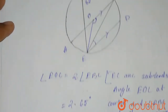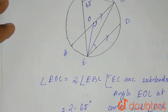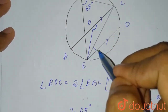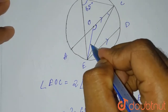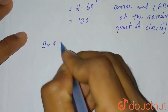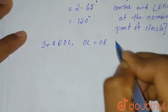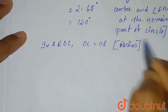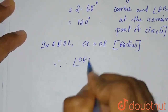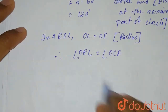Angle EOC equals 130 degrees. Now, if we consider triangle EOC, we can see that OC equals OE because both of them are radii. That means the angles opposite to these equal sides will be equal. So in triangle EOC, OC equals OE because they are radii.